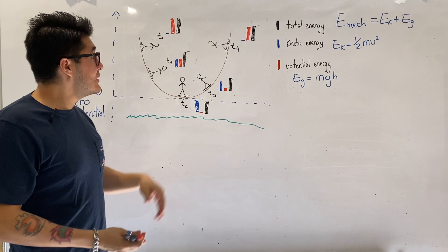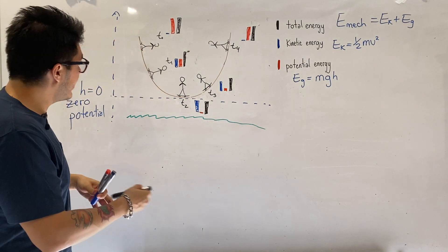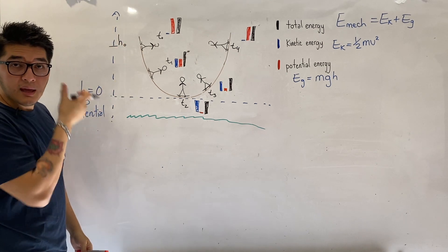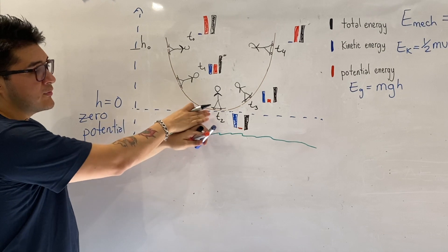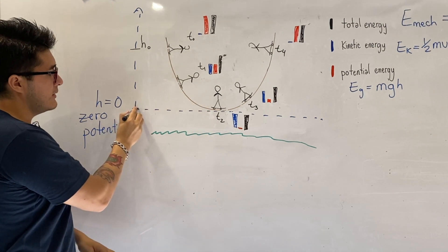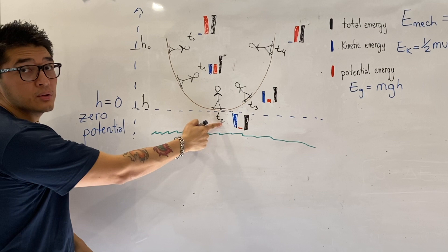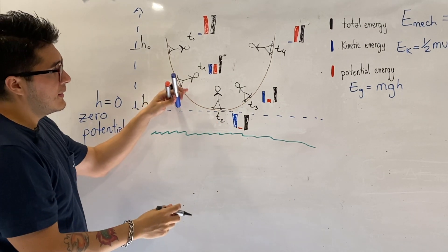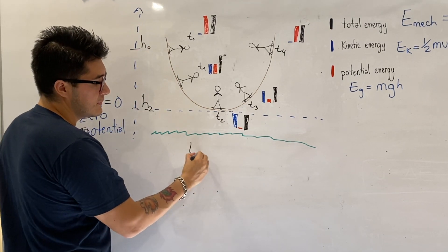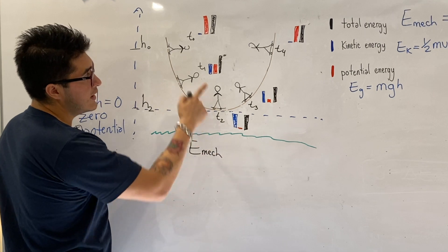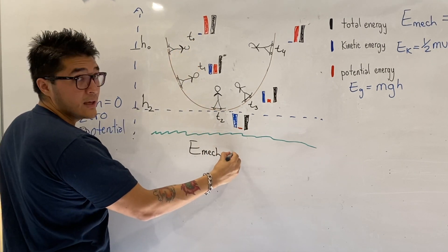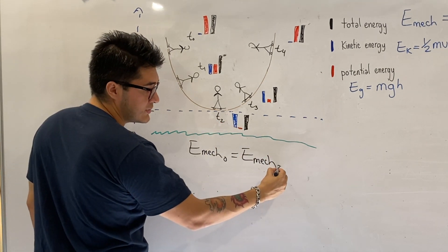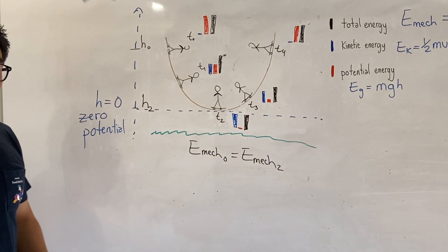So I'm going to consider at the maximum height, let's call that height h initial, and then let's consider at the very bottom of the ramp. Let's call this h2, because that's the frame that it corresponds to. Now, because the mechanical energy at frame zero equals to the mechanical energy at frame two, or the second position, in other words, we can come up with an equation.